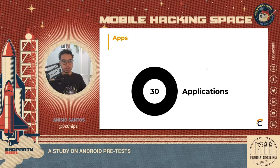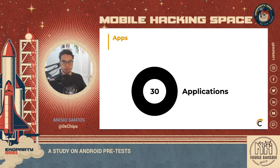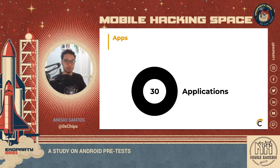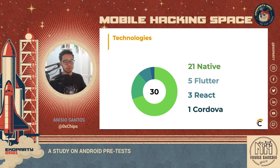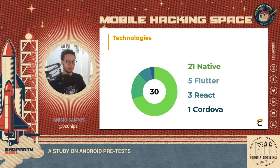I decided to talk about 30 of the applications I downloaded. Many of them were financial and e-commerce applications, because those apps that use money usually have some kind of hardening you have to bypass. From those 30 applications, 21 were native — using Java or Kotlin. 5 were Flutter, which was a surprise; I expected React to be second place. Third, with three applications, was React. And last, with only one application, was Cordova.